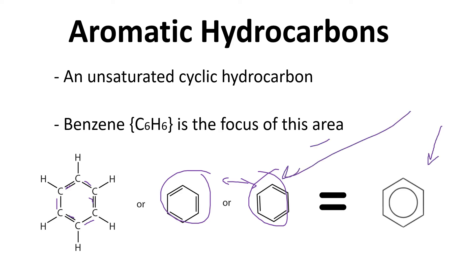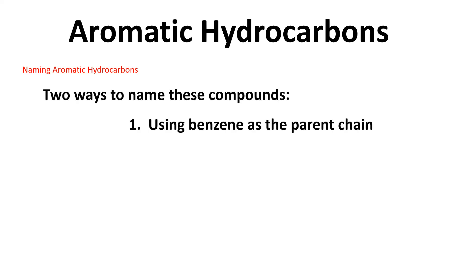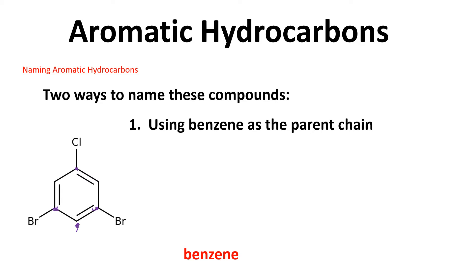This benzene ring covers both of those situations. Let's name some aromatic hydrocarbons — there are two ways to do this. One way is using benzene as the parent chain. Keep in mind we only have three spots to put substituents on the ring. In this example, the chloro is in the five position, so numbering gives us 1,2,3,4,5 — making it 1,3-dibromo-5-chlorobenzene.